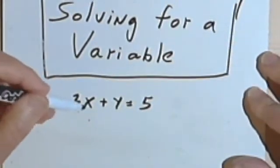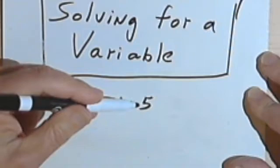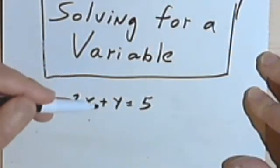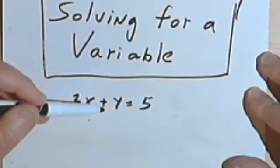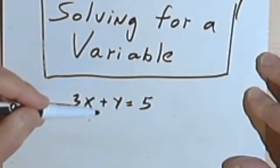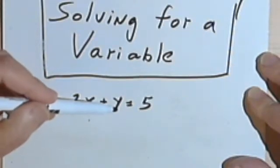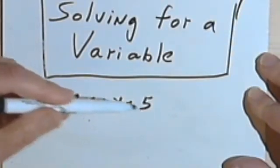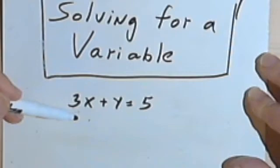Let's say you're given the equation 3x plus y equals 5 and you're given the instructions solve for y in terms of x. All that means is you want to get the y by itself on one side of an equation and everything else is going to go on the other side.